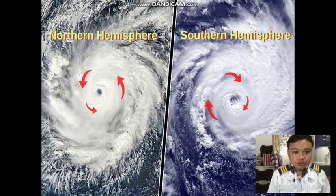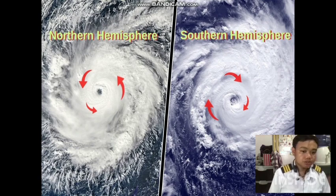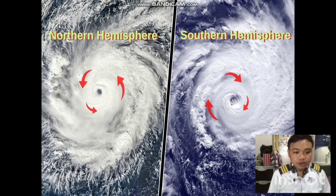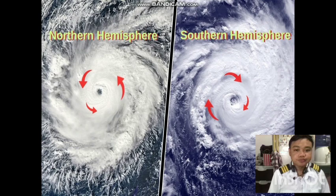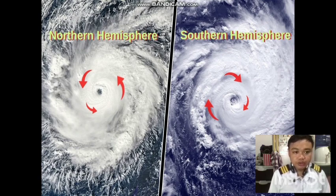We should also put into consideration the different characteristics of the tropical cyclone from the northern hemisphere and from the southern hemisphere. In the northern hemisphere, the cyclone moves in a counterclockwise direction, while in the southern hemisphere the tropical cyclone revolves in a clockwise manner. It is very important to consider the circulation of air within the tropical cyclone depending on its location.